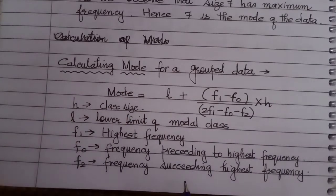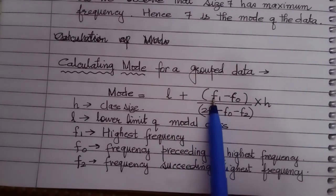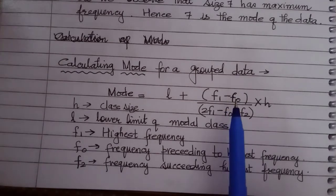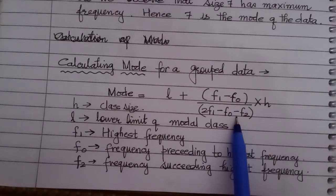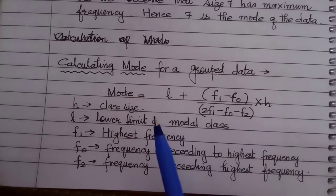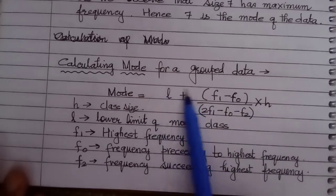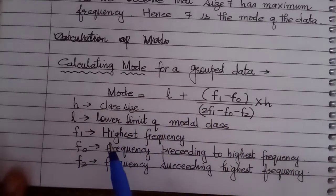L is the lower limit of the modal class. F1 is the highest frequency, F0 is the frequency preceding the highest frequency, F2 is the frequency succeeding the highest frequency, and h is the class size of that particular class interval.